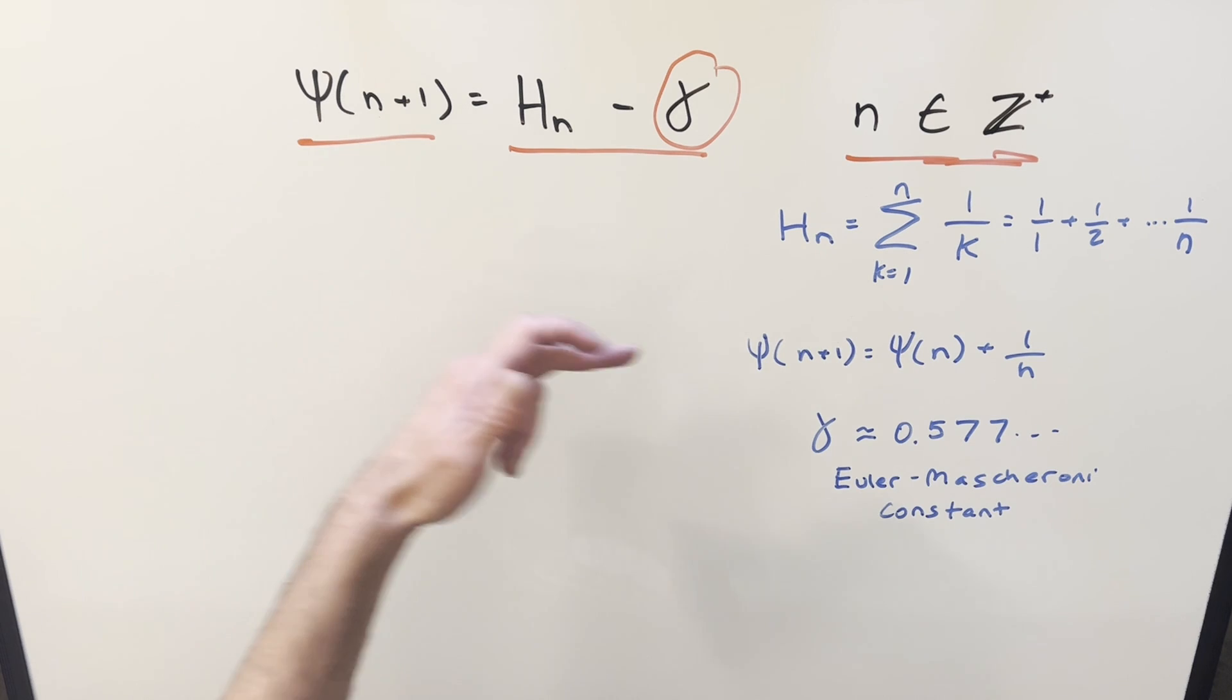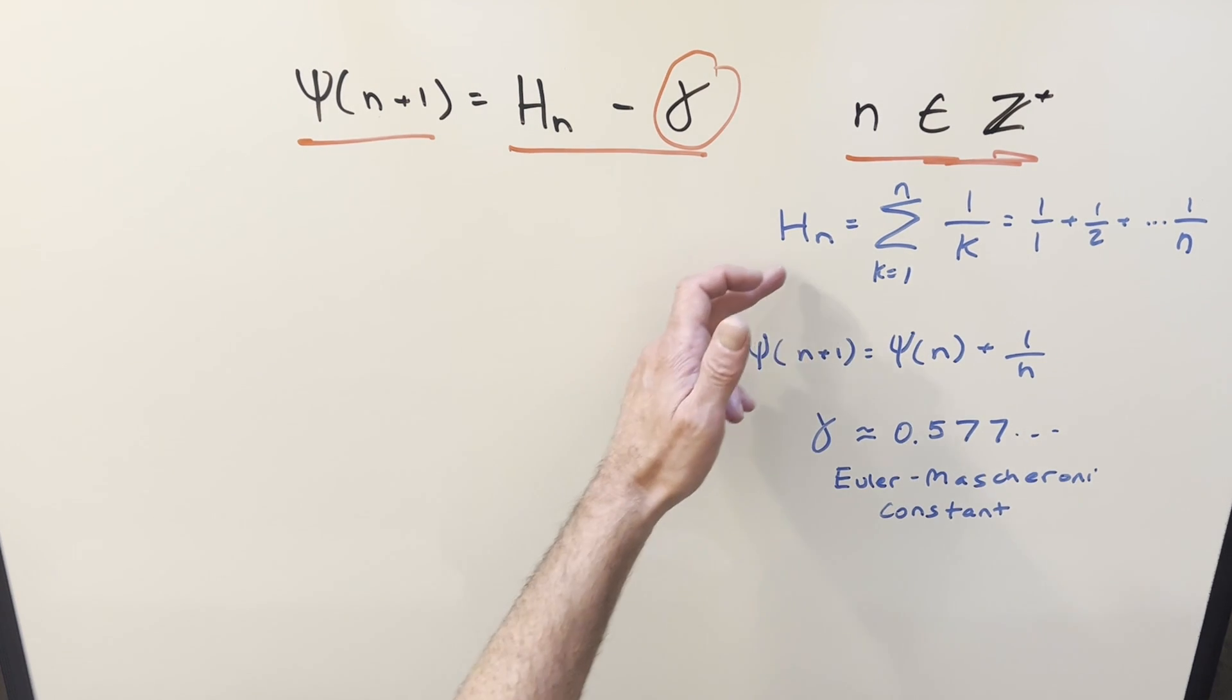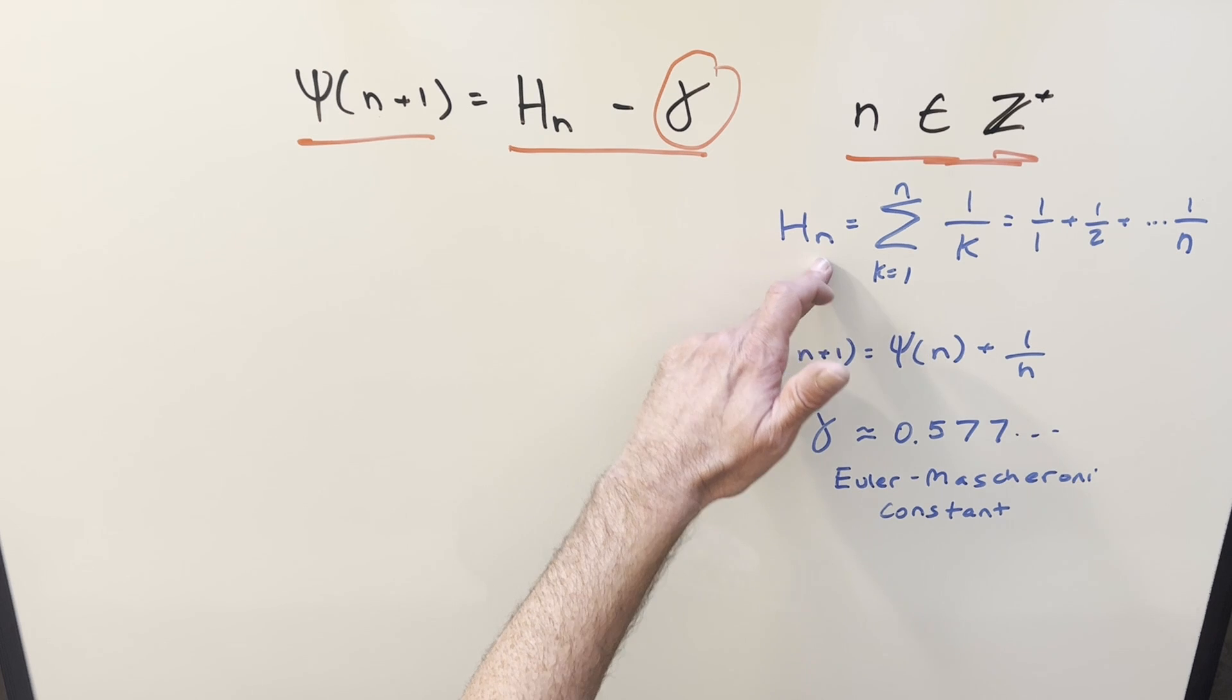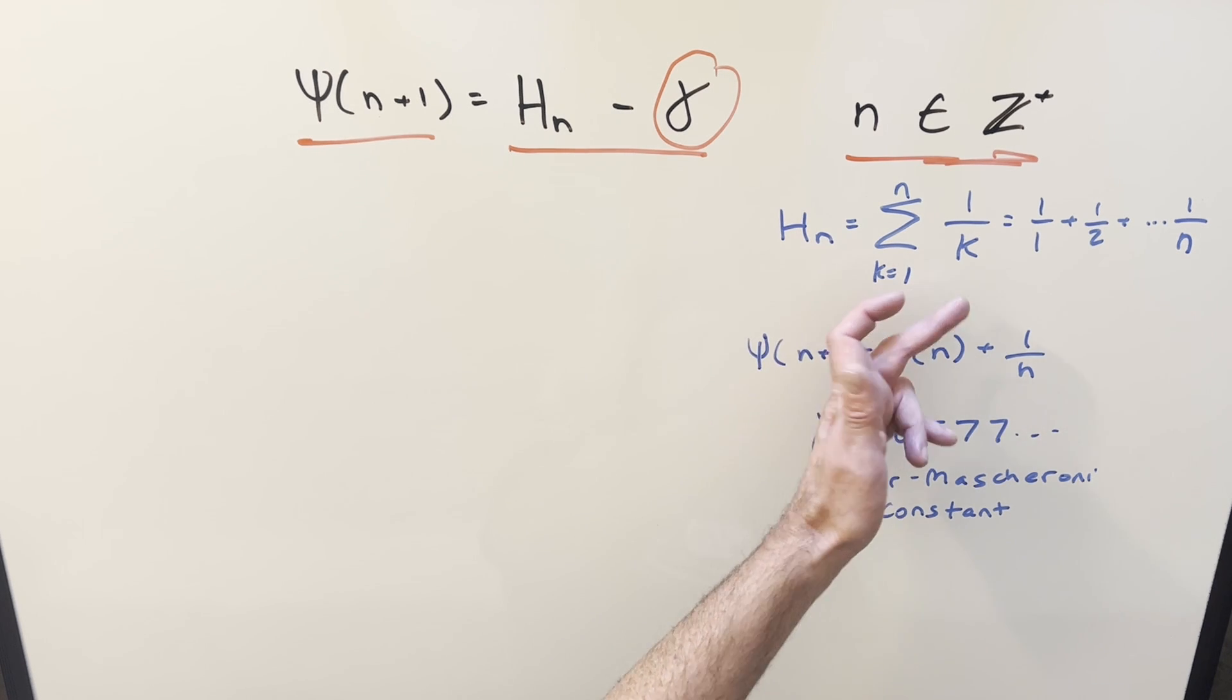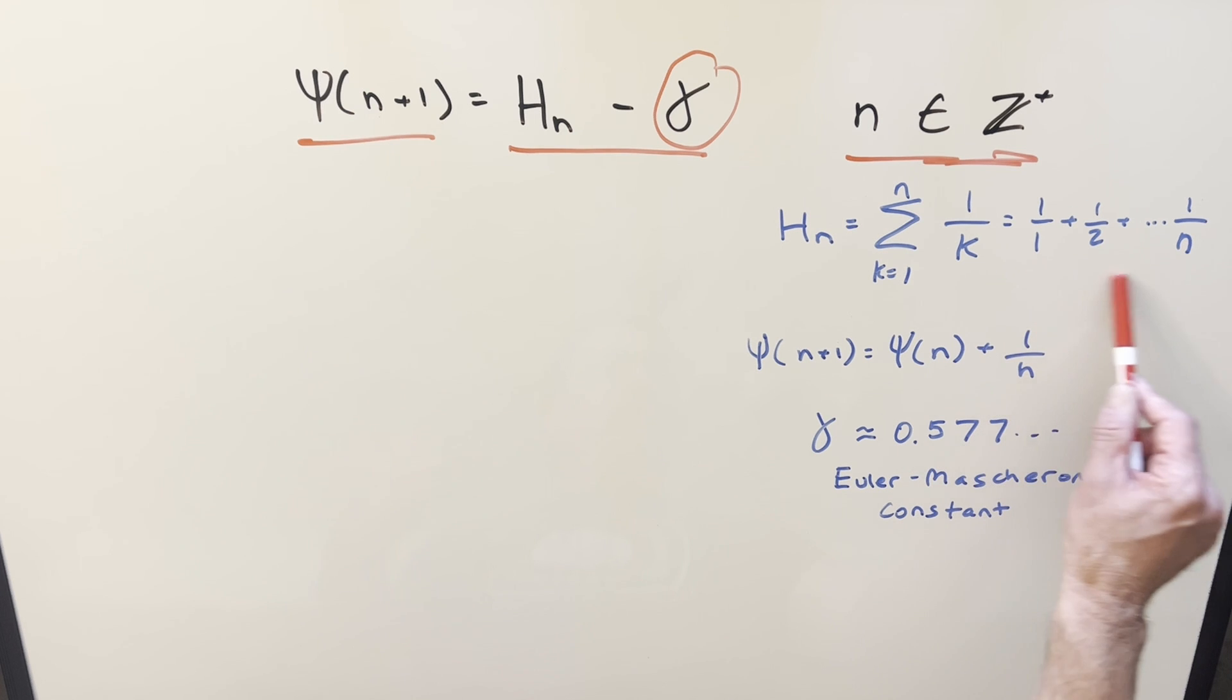First, for the harmonic numbers, if you're not familiar with this, it's pretty straightforward. We've got the definition for the harmonic numbers for an integer n is just going to be this sum here of 1 over k from 1 to n. So what you end up with is just part of the harmonic series going just to n.